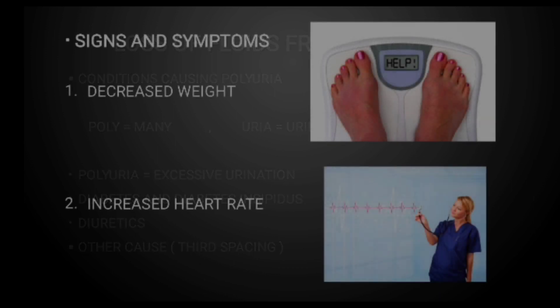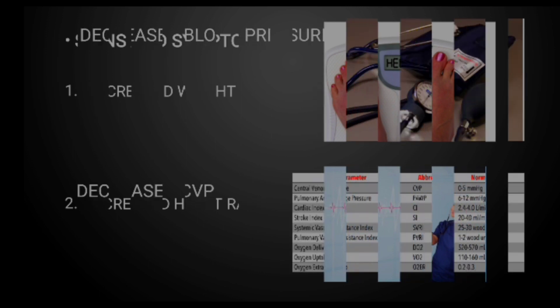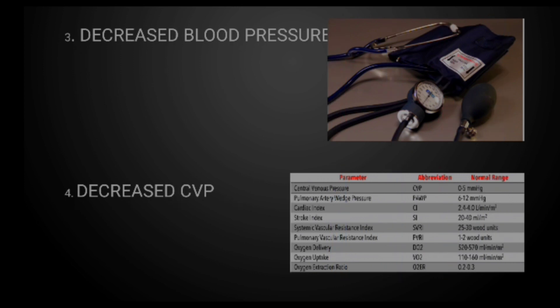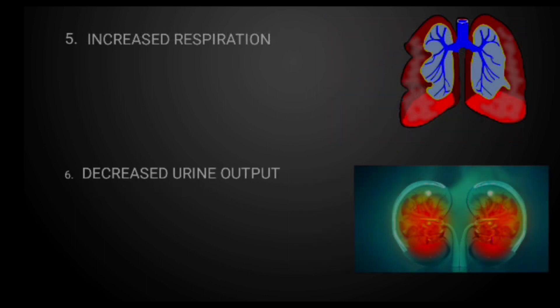Now let's look at the signs and symptoms of hypovolemia. First is decreased weight — this is acute loss of water weight because we have less volume. Second is increased heart rate because the heart is trying to pump fluid to the body but there is not enough volume; the pulse will be weak and thready. Third is decreased blood pressure because we have less volume, which means less pressure. Fourth is decreased central venous pressure, or CVP — low volume therefore low pressure. Fifth is increased respirations, and sixth is decreased urine output because the kidneys do not have enough fluid to push out.